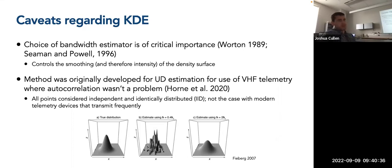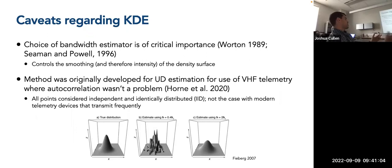This figure shows the true distribution on the left side, and then examples of estimated distributions based on different values of bandwidth parameter H. In the middle, a small value for H produces a bunch of highly fragmented peaks in the utilization distribution. To the right, a larger value of H smooths the surface out much more — illustrating how bandwidth dramatically affects the estimated utilization distribution.